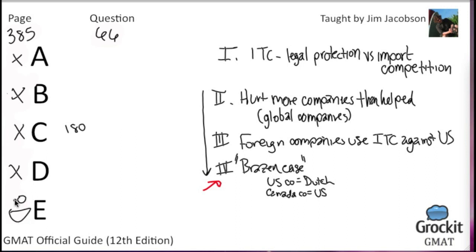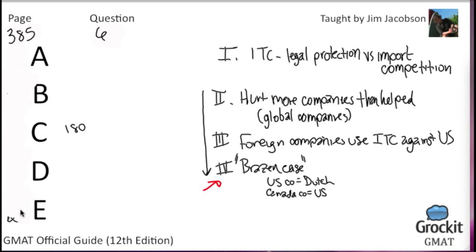All right, on to question 67. The passage warns of which of the following dangers. There's not a particular part of the passage that specifically — I don't remember a specific warning in there. The whole thing is about how it hurts more companies than it helps and how foreign companies can use it against the United States, so the answer would probably be something like that.